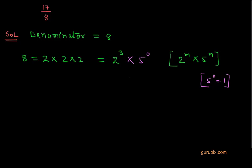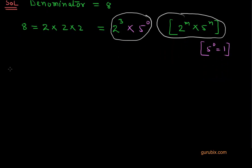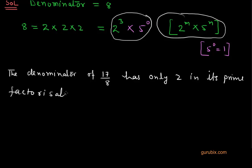So we observe that these two forms are the same. There is no other prime number in the denominator of 17 over 8. So we can say that the denominator of 17 over 8 has only 2 in its prime factorization. Therefore, 17 over 8 will have a terminating decimal expansion.